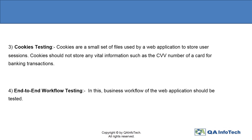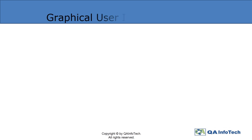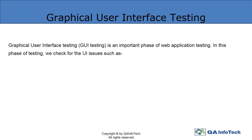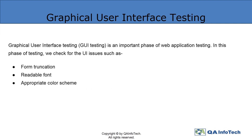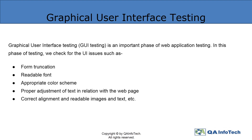Moving on to the second type of web testing: graphical user interface testing, or GUI testing. It plays a crucial role in checking the UI aspects, whether it be the color scheme, adjustment, and alignment of the text, and many others.